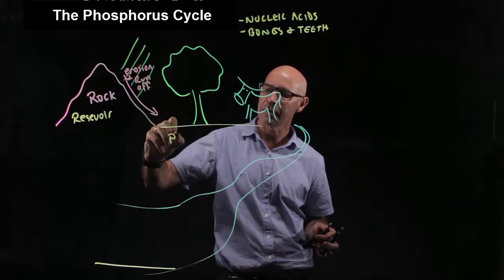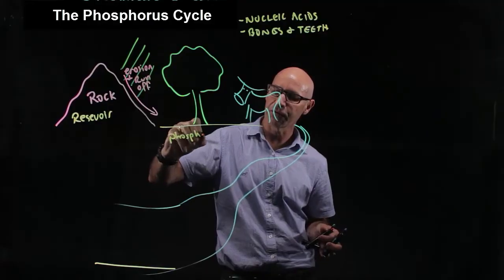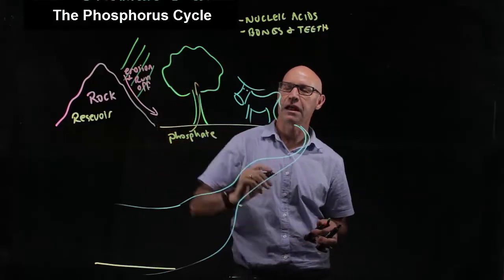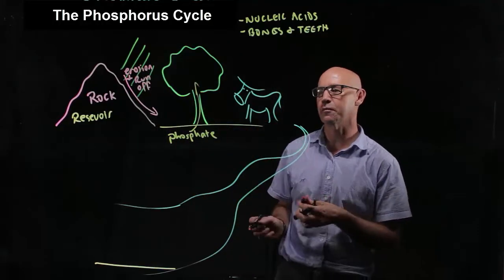Then that phosphorus in the soil gets taken up as a phosphate by plants and is incorporated into the tissue of the plant.